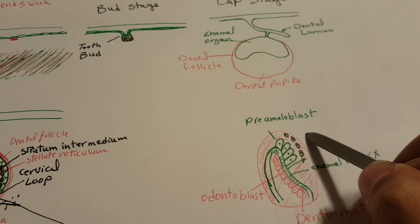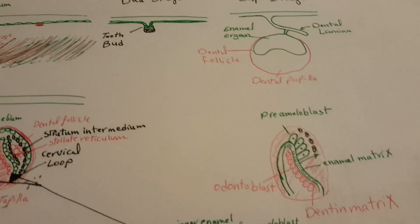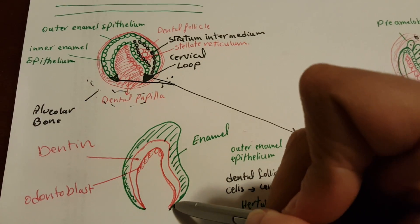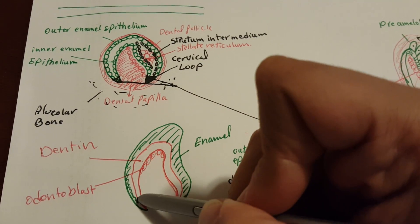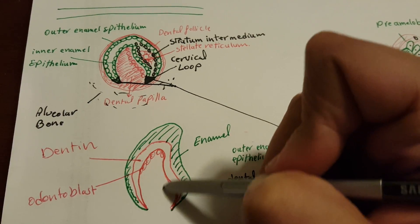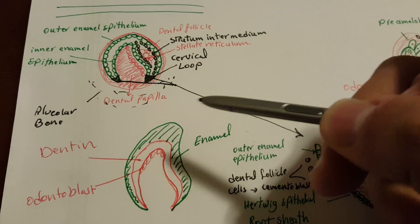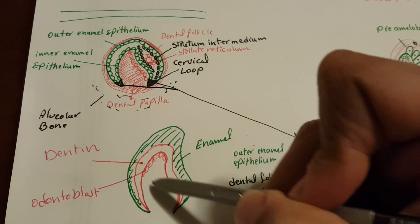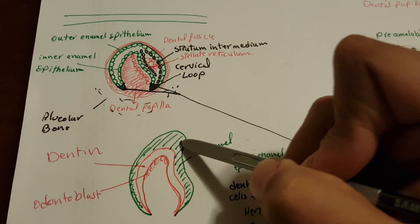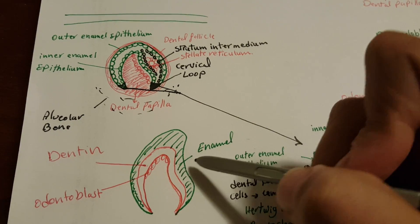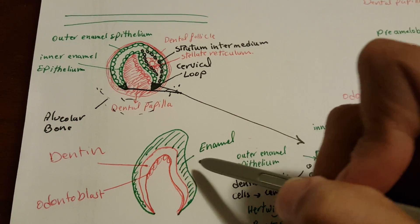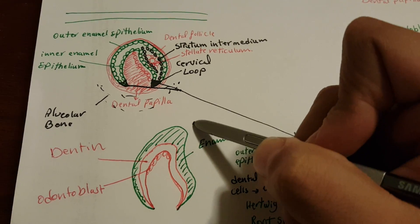The ameloblasts move up, leaving enamel matrix. So here is the enamel matrix, here is the dentine matrix, this is the formed odontoblast, and this is the formed ameloblast. Next is the calcification of the enamel and then the calcification of the dentine. The odontoblasts remain in the dental papilla, but the ameloblasts that formed the enamel will degenerate and lose function — that's why your enamel does not regenerate.